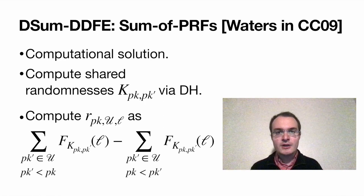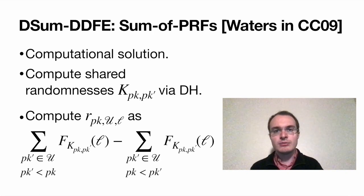The answer to that is yes, in a computational sense. A solution appears in Chase and Chow 2009, and is attributed to Brent Waters. It consists in having each pair of parties compute a shared key, through a non-interactive key exchange scheme. Then, from that shared key, they can compute a shared randomness that is specific to a label, simply by evaluating a PRF with that key, on that label. And now, they can combine all the randomnesses they computed according to this formula here, where only some of them have a negative sign. Now it's easy to see that if my randomness with you has a positive sign, then your randomness with me has a negative sign. When we sum it all up together, all the randomnesses cancel out, as we were hoping for.